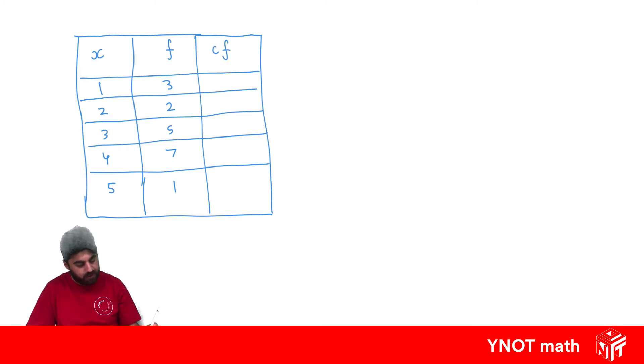The way to fill out our cumulative frequency column is we first just copy over our first frequency of 3. Then for our next cumulative frequency, we take our frequency and add our previous cumulative frequency, so we add diagonally.